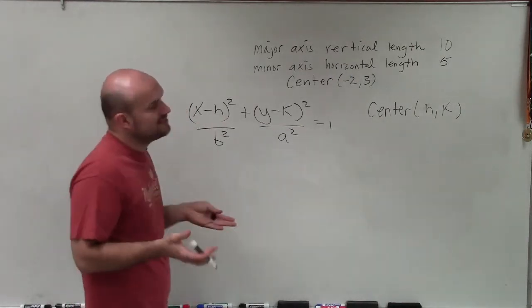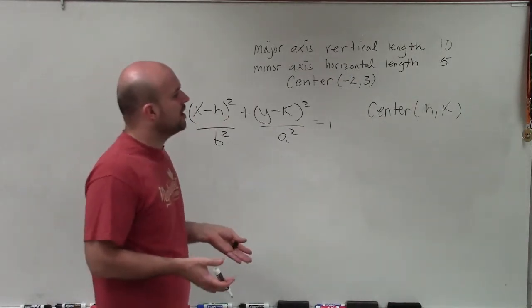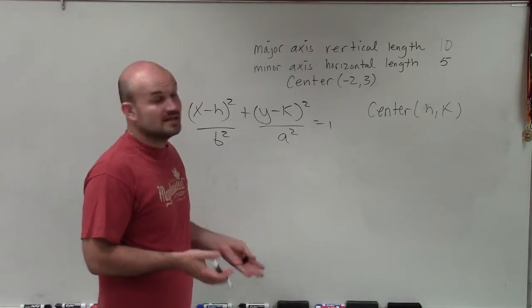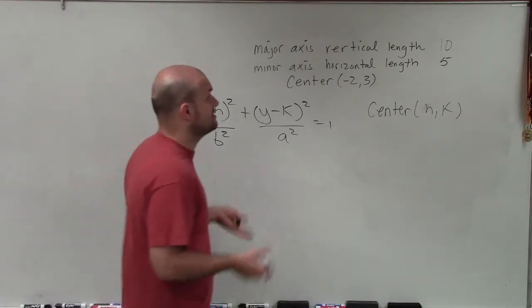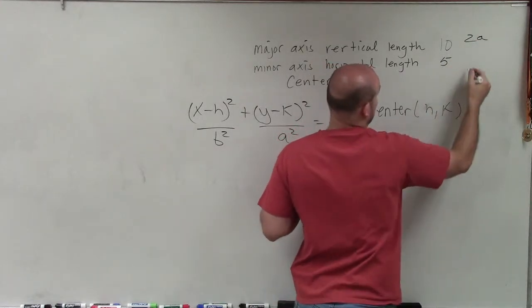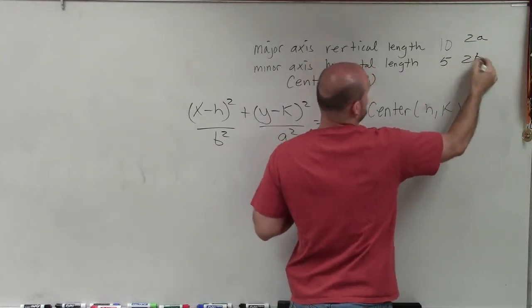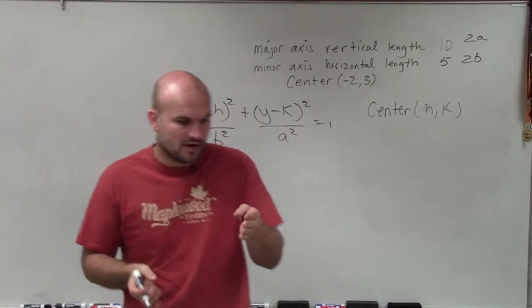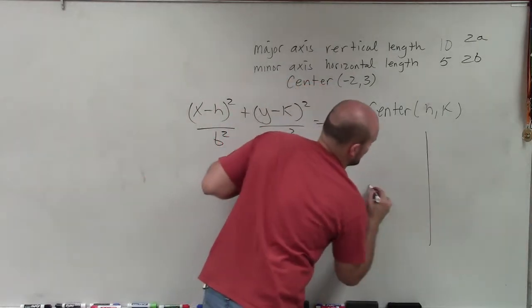Now, the only thing is we need to figure out what exactly is going to be our value of A and value of B, because the major axis actually has a length of 2a, and the minor axis has a length of 2b. Let's show it on the graph here.